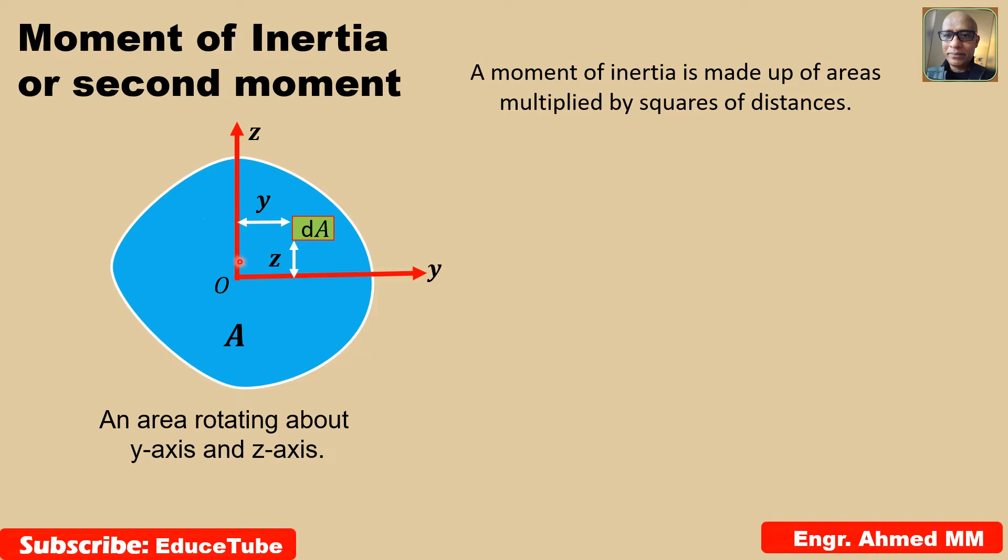The moment of inertia about an axis, say y-axis or z-axis, is a measure of how difficult it is to rotate the plane area. An object with large moment of inertia needs a large turning force to achieve a given angular acceleration. Very important points to understand.